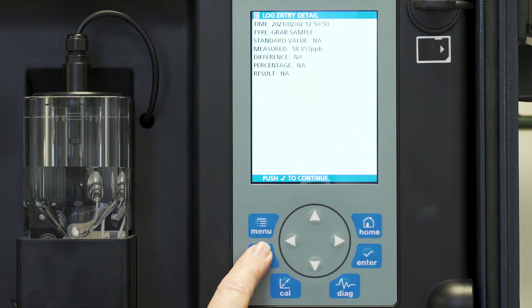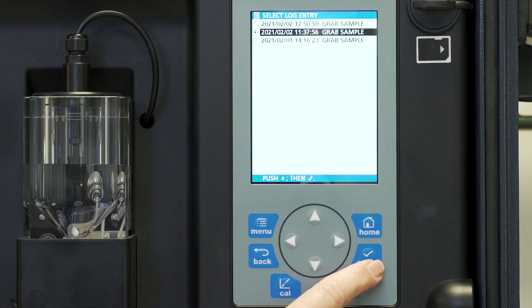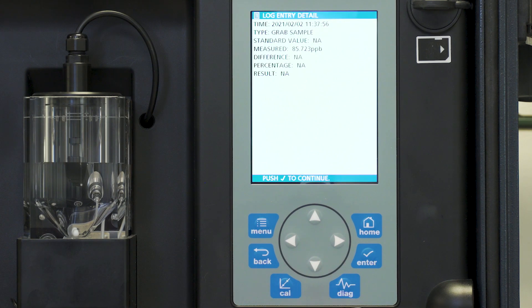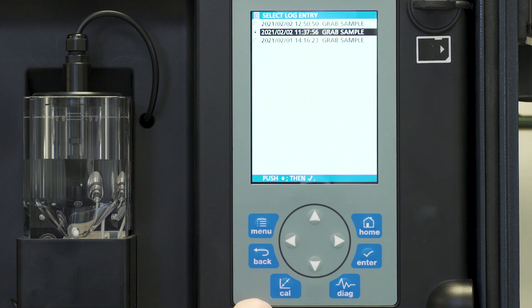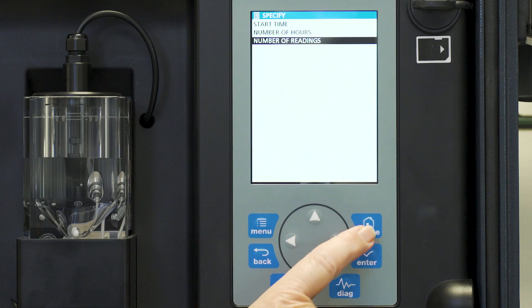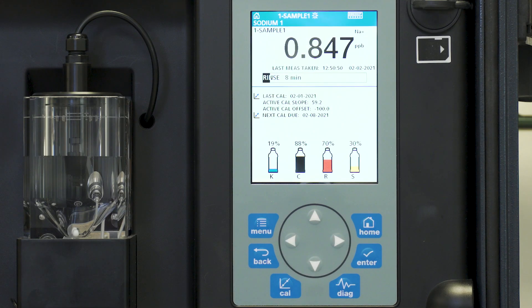I can also go back and look at a previous grab sample reading if I want. So every grab sample reading is logged into data. Move back to the main screen. And the instrument will begin to finish its rinse and then start a new measurement.